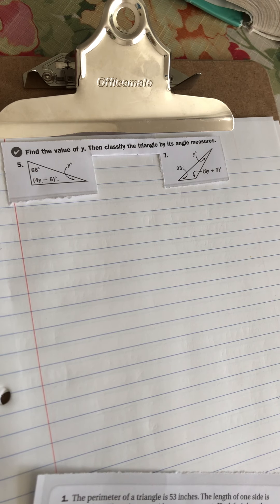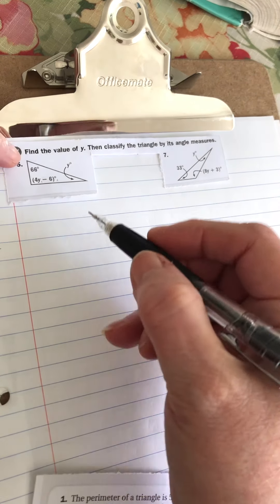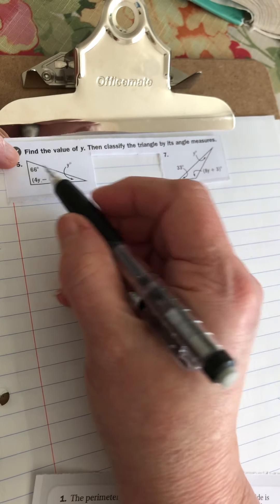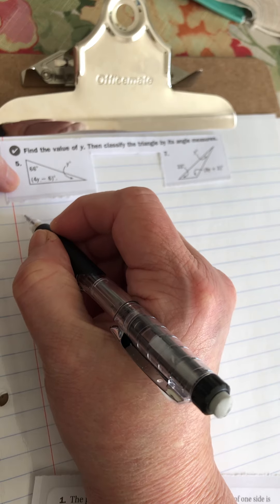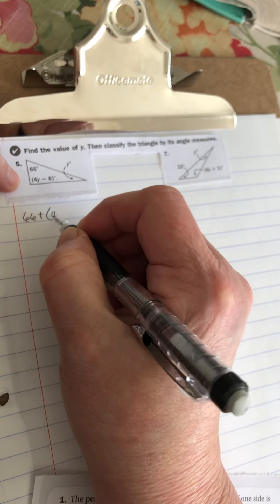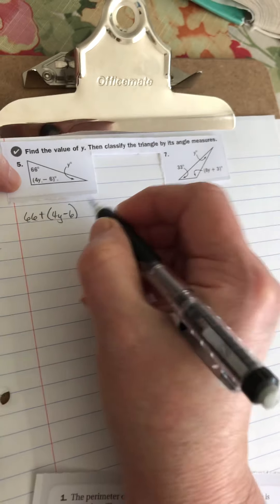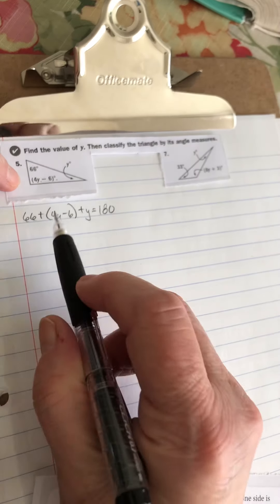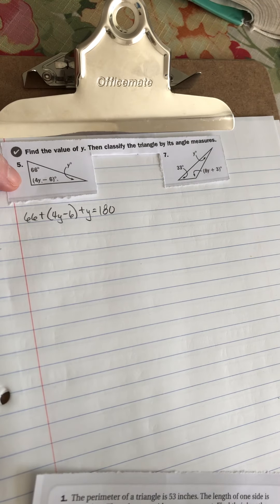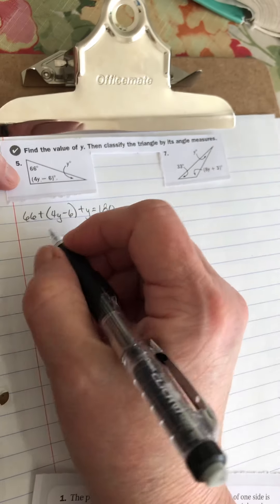So 10.1 was all about triangles, and in triangles we know that a triangle has to add up to 180 degrees, and that's what we start with. So I know with this triangle that it has to add up to 180 degrees. So 66 plus 4y minus 6 plus y equals 180. That says three things added up. Triangle has three angles.